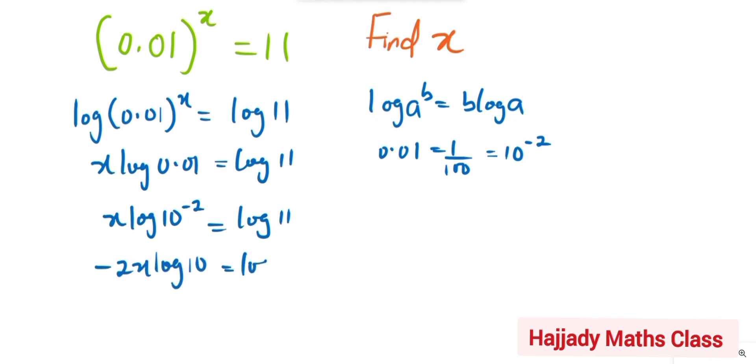From the basic knowledge of logarithms, we know that log 10 automatically has the base of 10, and log 10 base 10 is the same thing as 1. So here at the left hand side, we are going to have -2x = log 11.